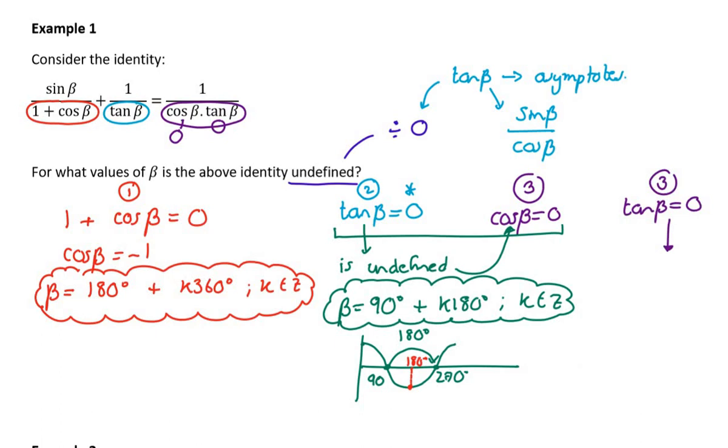Well, either you can draw the tan graph, or you can just shift tan of 0, and you should know that it's 0. And that'll be 0 plus k180. k as an element of integers.